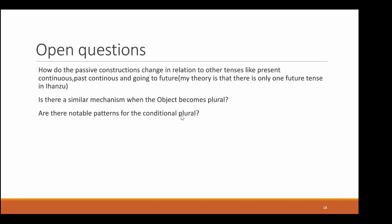Some open questions: How do the passive constructions change in relation to other tenses, like present continuous, past continuous, and going-to future? I think there isn't actually something like a going-to future, because the real future already shows all the information we need. Is there a similar mechanism when the object becomes plural? And are there notable patterns for the conditional plural? All of these questions need further examination and many more examples.